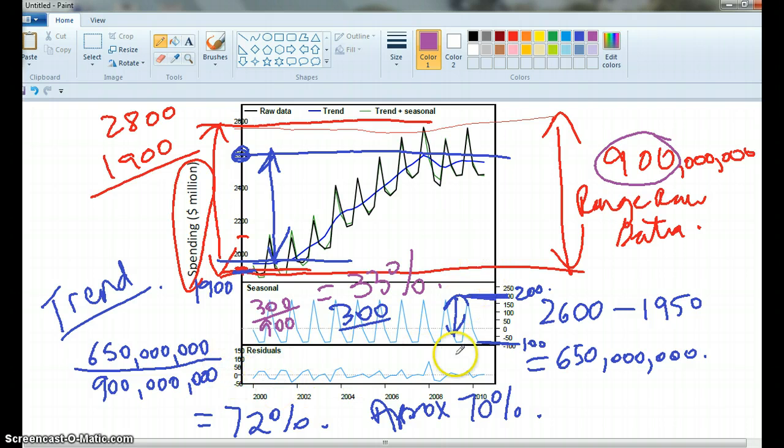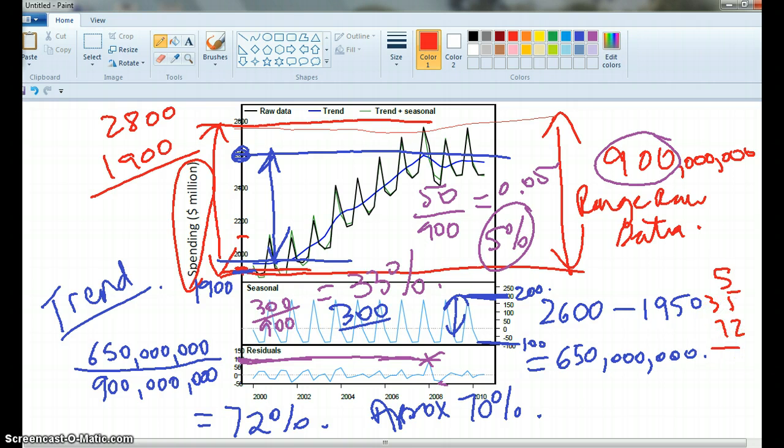Residuals. So the residuals here, very interesting, the maximum residual is this one. So I only look at that maximum residual, and that looks at about, I'm going to call it 50. So I'm going to go 50 over the 900. What's that? 0.05, so what does that become? 5 percent. So just roughly, I've got 5 percent, I've got 35 percent, and I've got 72 percent. And that's adding up to? 100 and... Yeah. So it hasn't added to 100 percent.